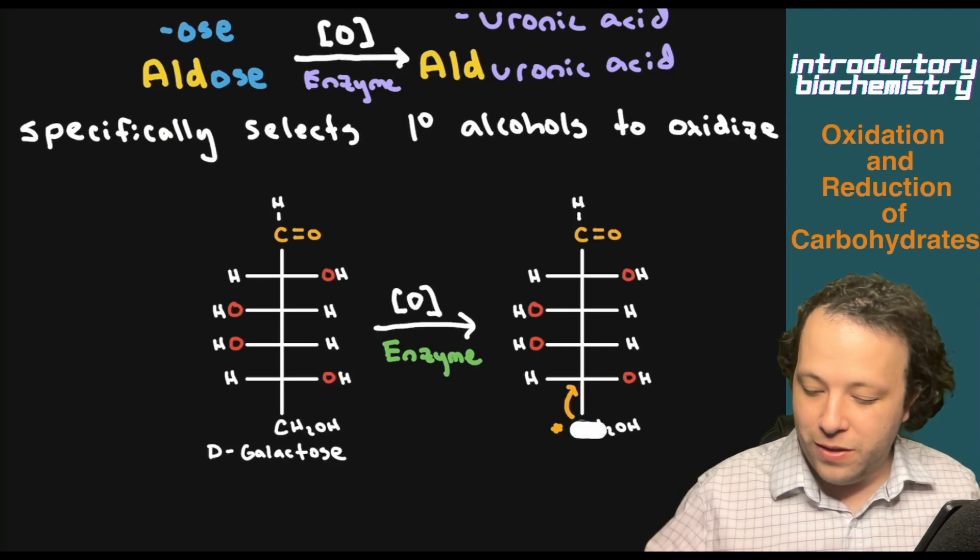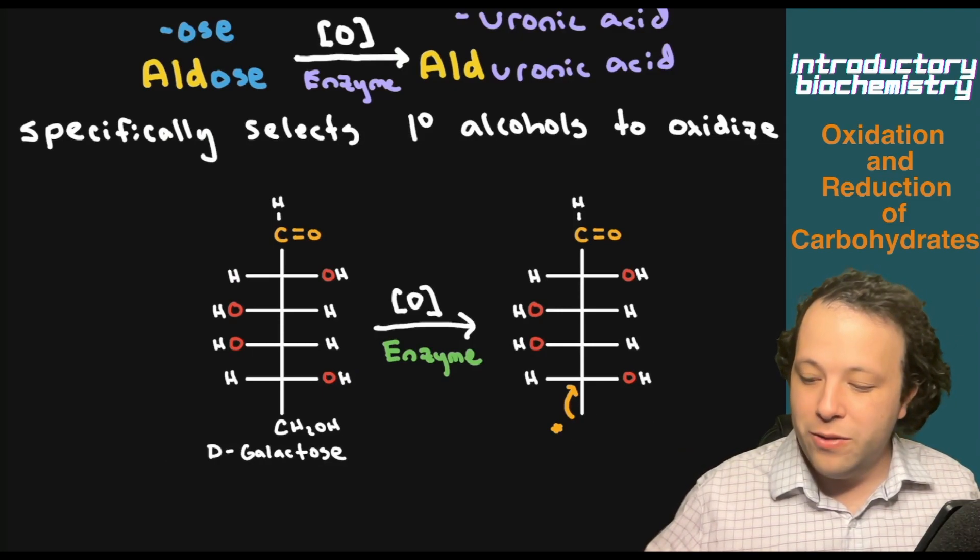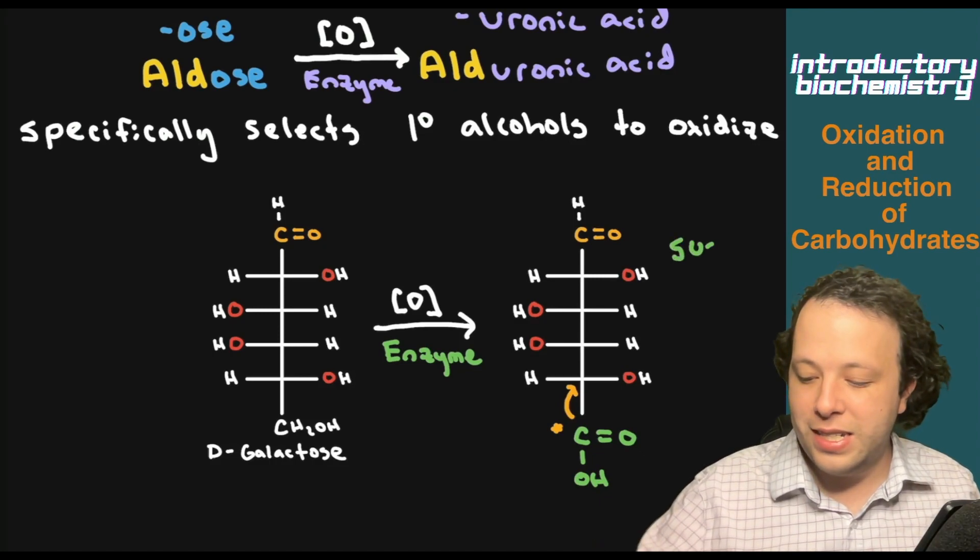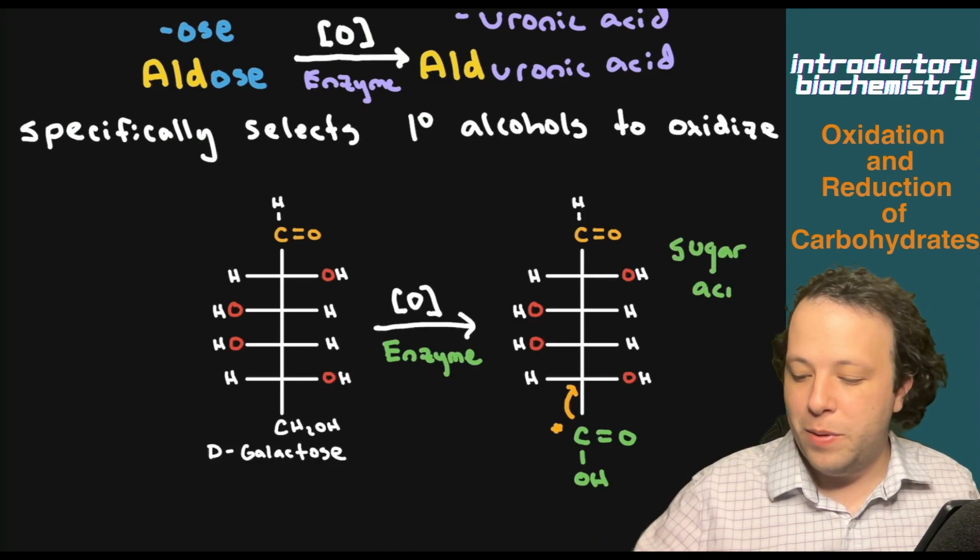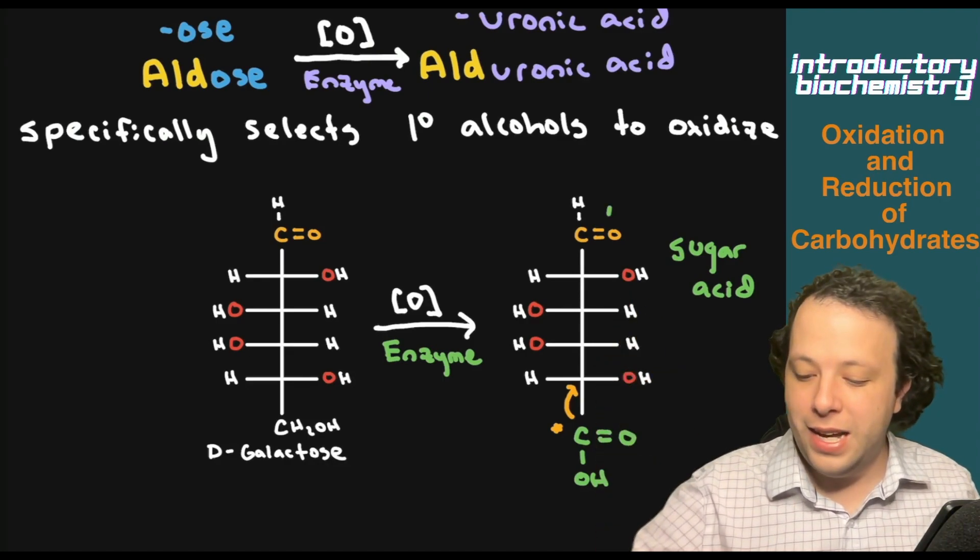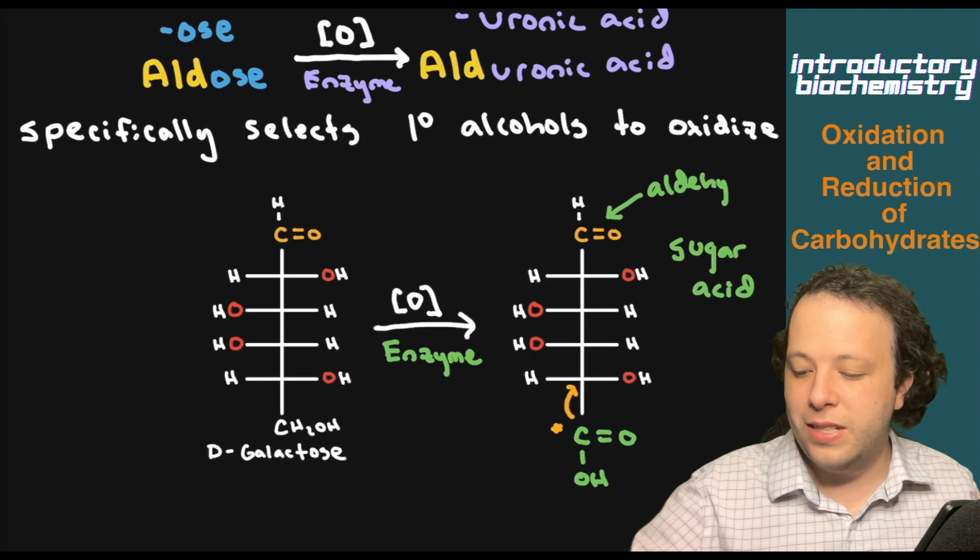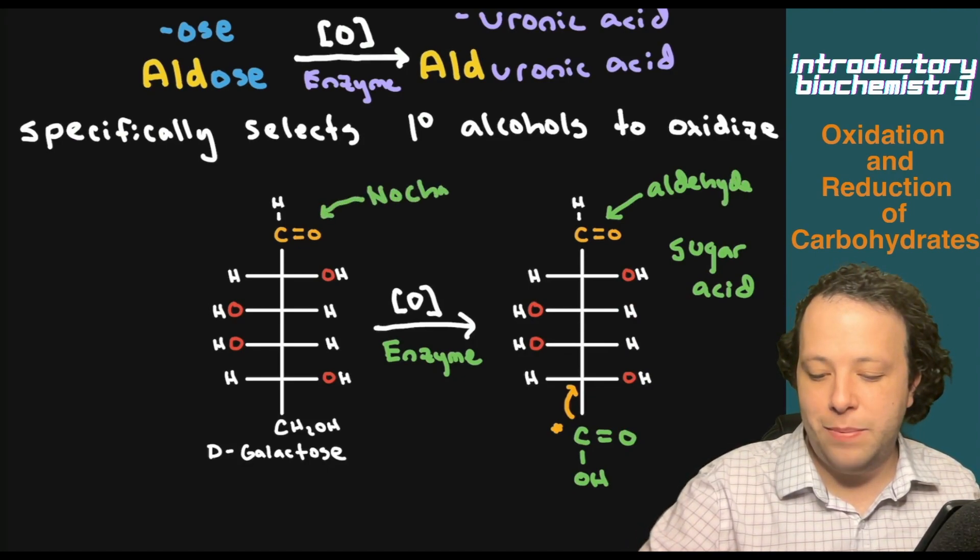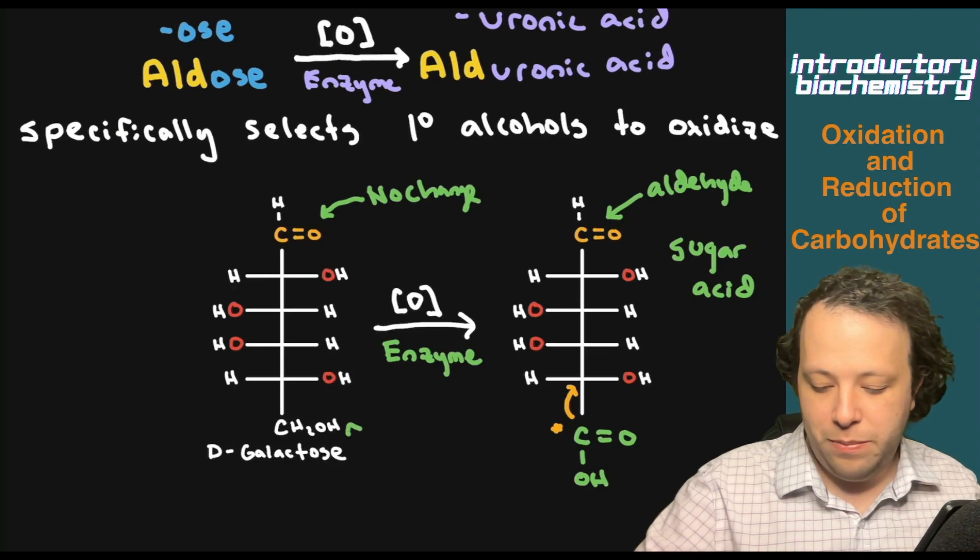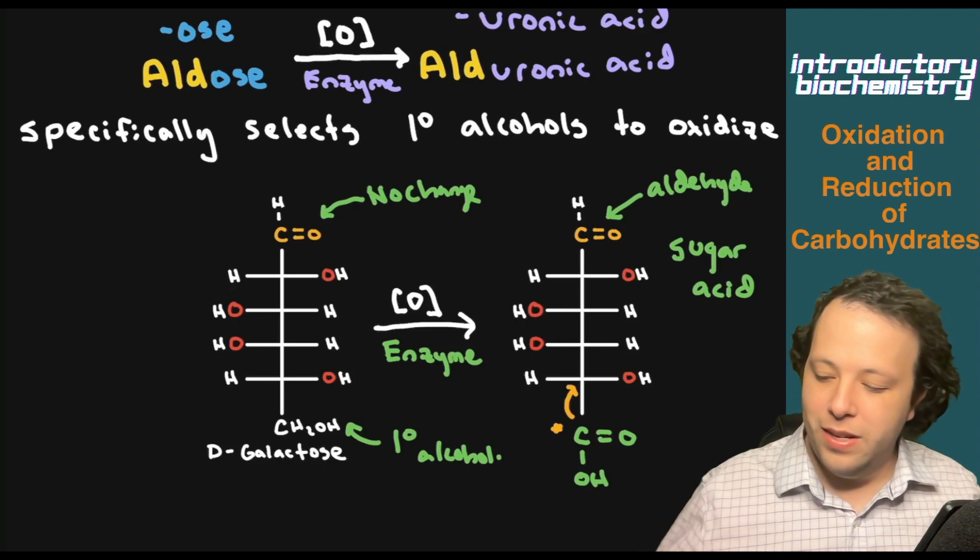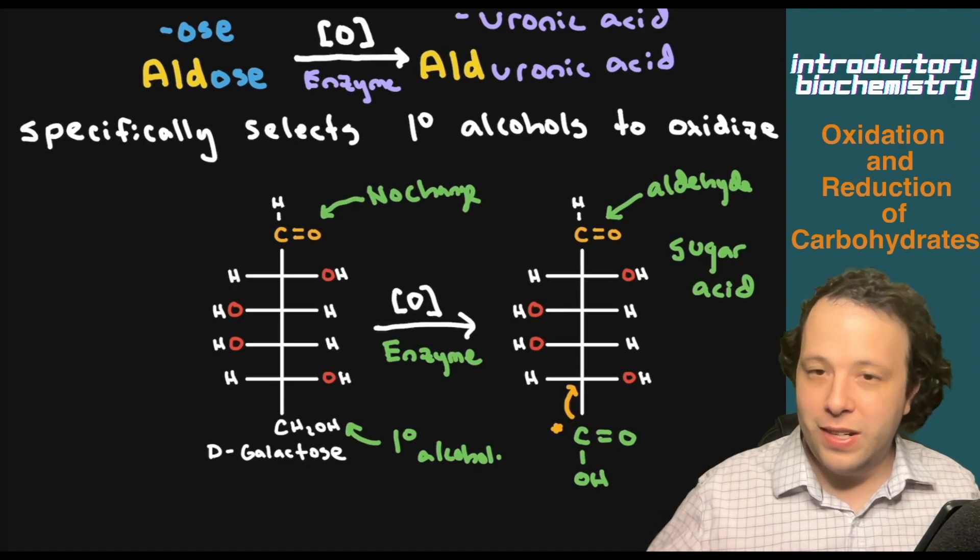The bottom alcohol here is going to rearrange itself to become a C double bond O with an OH. We have another sugar acid that is going to form, but only on the bottom. The top is still an aldehyde. There's no change to the top. It only picks primary alcohols.